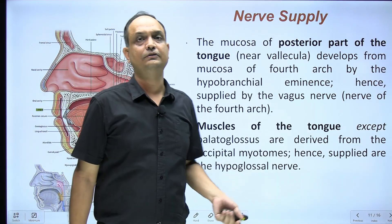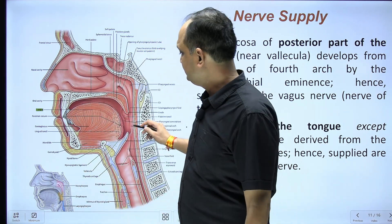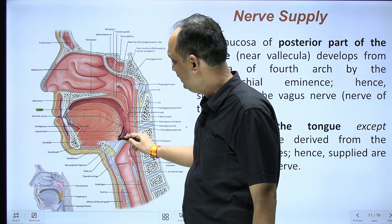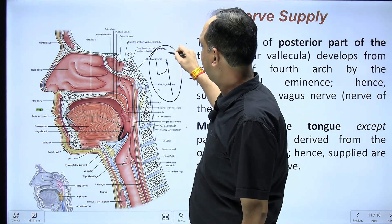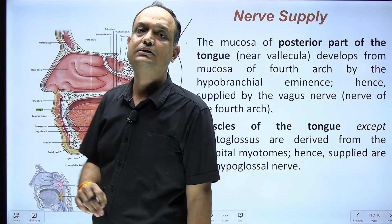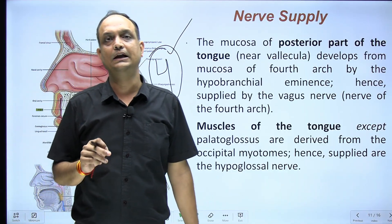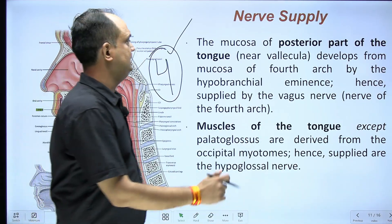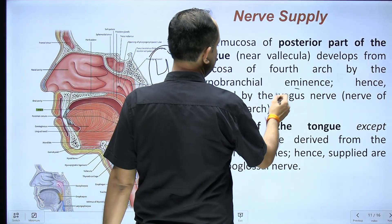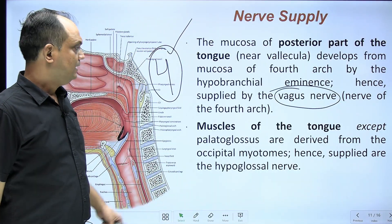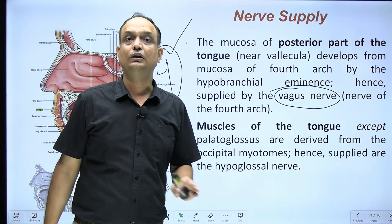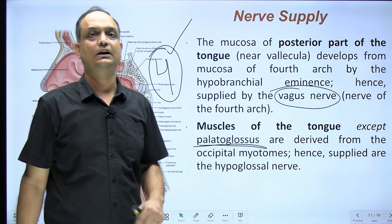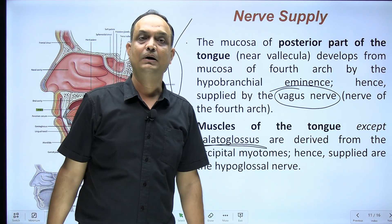The posterior-most part of the tongue, around the vallecula, develops from the fourth pharyngeal arch and is supplied by the superior laryngeal nerve, a branch of the vagus nerve. All muscles of the tongue except the palatoglossus are supplied by the hypoglossal nerve, as they all arise from the occipital myotomes.